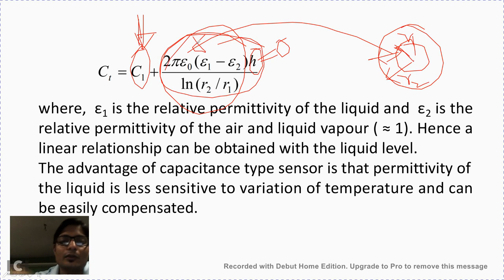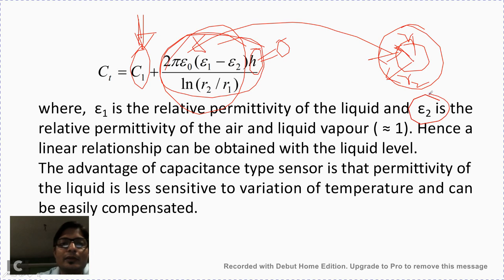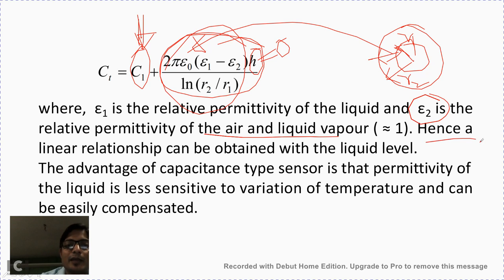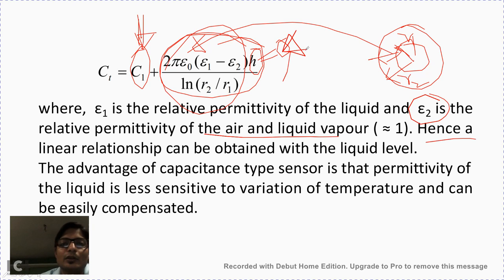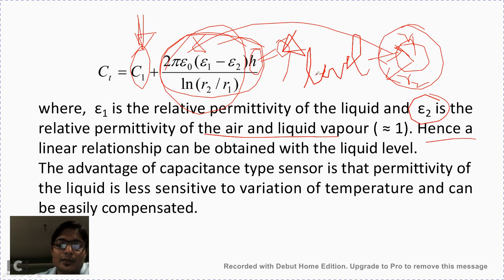Hence a linear relationship can be obtained with the liquid level. Whenever there is a rise in liquid level, as this is a constant, there will be a rise in the capacitance value, and that rise directly indicates the level. So this way we can also measure the level of liquid present in the container.